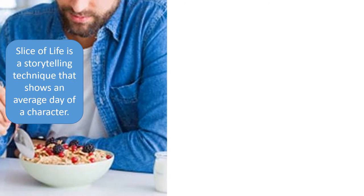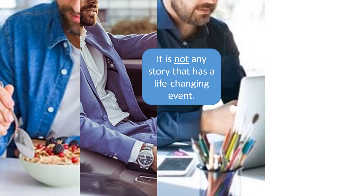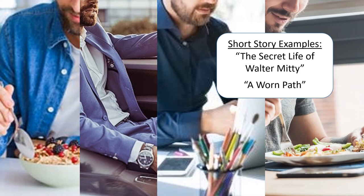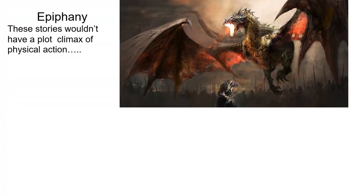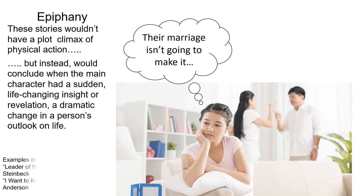Slice of life is a storytelling technique that shows the average day of a character. It's intended to reveal the character to the reader by showing what life was like for that person — not any life-changing event, but an everyday sort of thing. Think of 'The Secret Life of Walter Mitty' or 'A Worn Path'; these are things these characters go through all the time. Another new plot structure was the epiphany: epiphany stories don't have a plot climax of physical action, but rather conclude when the main character has a sudden life-changing insight or revelation — a dramatic change in that person's outlook on life.